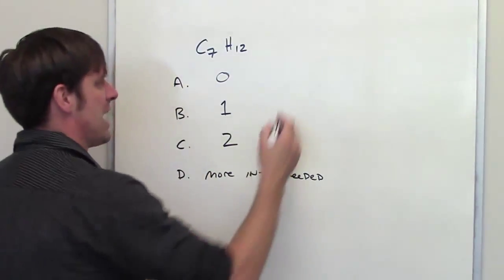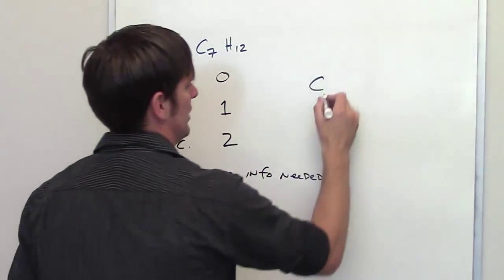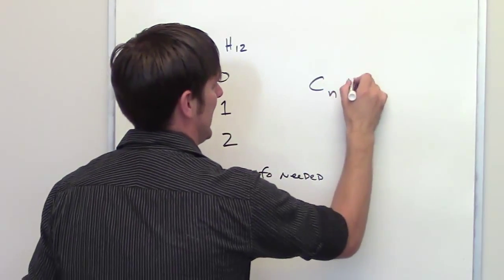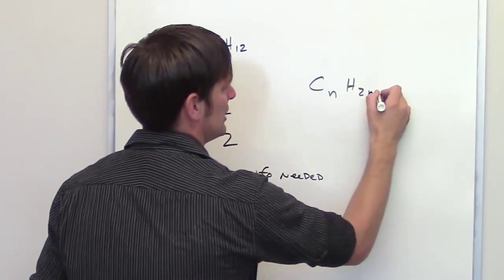Generally speaking, if I have a straight-chain boring alkane, or it could even be a branched alkane, the formula for that alkane is going to be CnH2n plus 2.